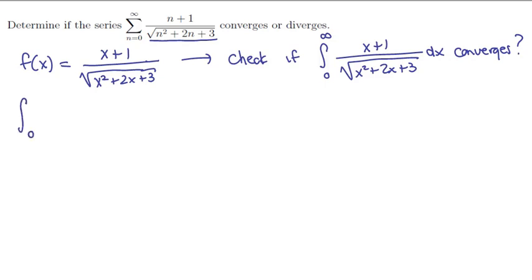Let's work out the integral from 0 to infinity of (x+1) times the quantity (x² + 2x + 3)^(-1/2) dx. Let's see if this improper integral converges or diverges.